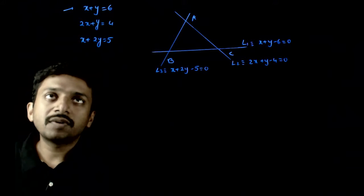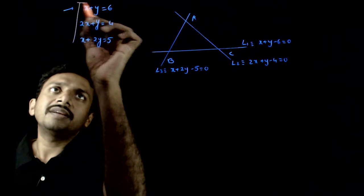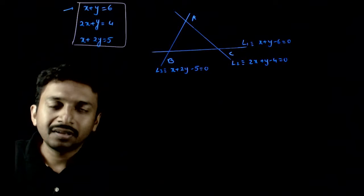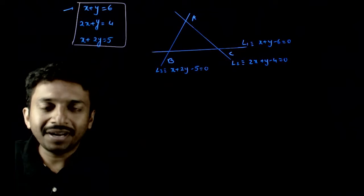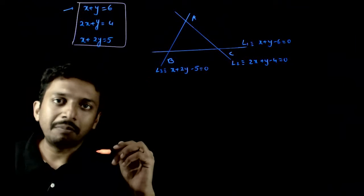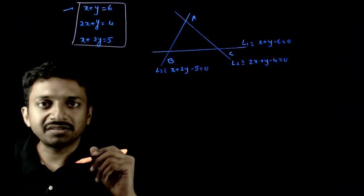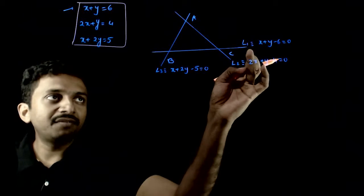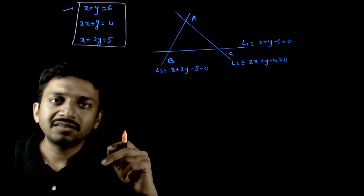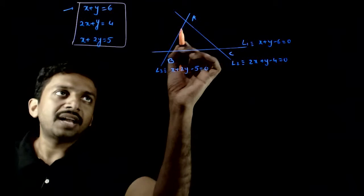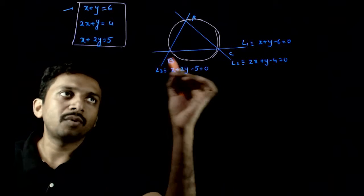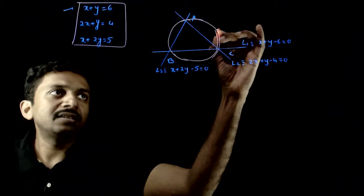Welcome students. In this question you are given three lines — line 1, line 2, and line 3 — and you are asked to find the circumcircle of the triangle formed by the points of intersection of these three lines. So, these three lines are intersecting each other to form a triangle, and this triangle's circumcircle is being asked. I want to find the equation of that circle.